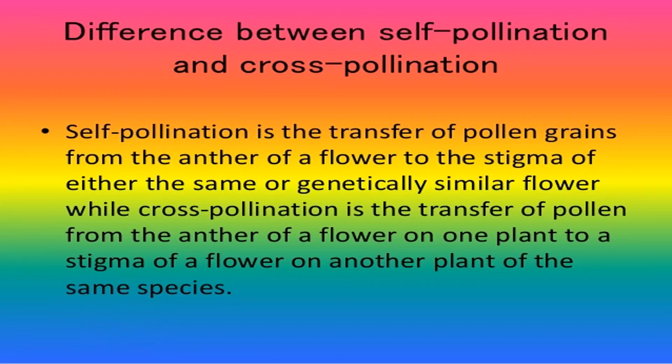Now, what is the difference between self-pollination and cross-pollination? This is again just a revision. Self-pollination is the transfer of pollen grains from the anther of a flower on one plant to the stigma of a flower on the same plant, whereas cross-pollination is the transfer to the stigma of a flower on another plant but of the same species.